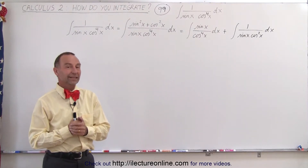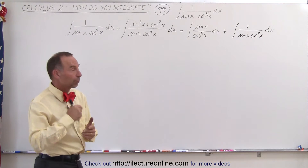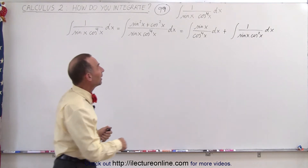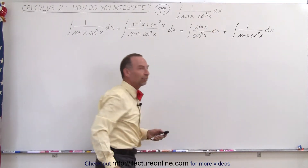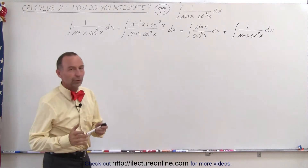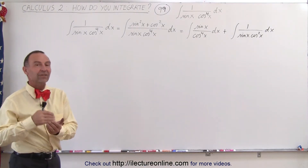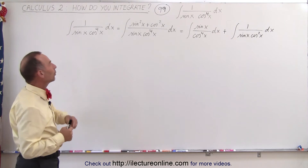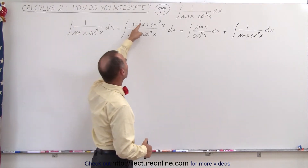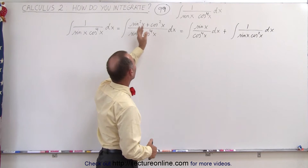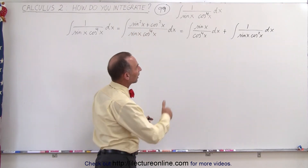Welcome to White Lecture Online. The difference between this integral and the one we did previously is that here we have cosine to the fourth power in the denominator instead of cosine to the third power. It does change things a little bit, but the general technique is still the same. We're going to replace the one in the numerator by the sum of sine squared plus cosine squared, thus ending up with two separate integrals.